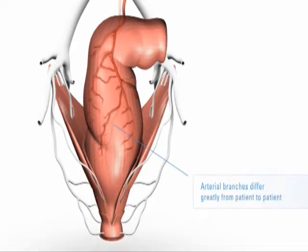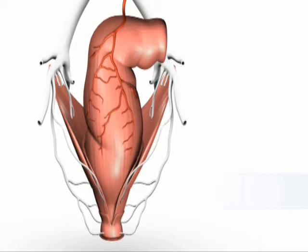The same also goes for the position of the rectal arteries in the hemorrhoidal cushions. In summary, it can be said that neither the number nor the position of the rectal arteries is predictable.